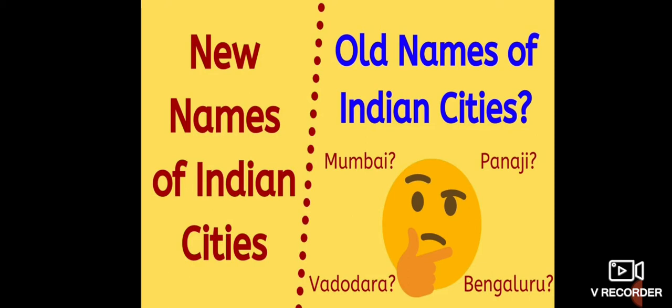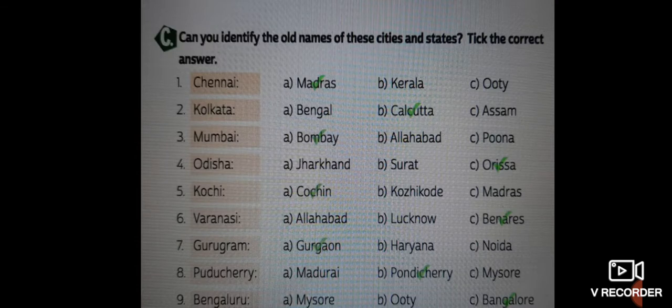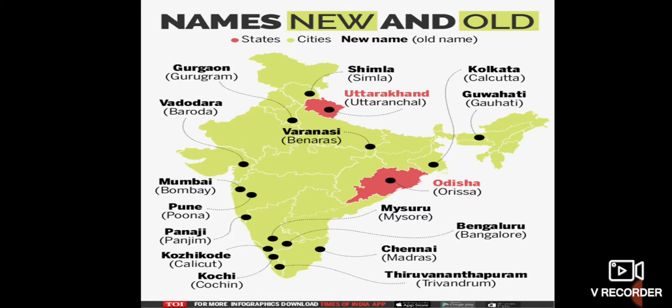Aaj hum discuss karenge about the names of certain cities — kuch aise shehron ke naam jo pehle kuch aur the, aur ab badal kar kuch aur kiye hain. For example, aap jis city Mumbai ko jaante hain, Maharashtra ki city hai Mumbai, usko pehle Bombay kaha jaata tha. This is the exercise of your chapter and we will do this today — Names: New and Old. Kuch bohat saari cities hain India mein jinhe pahle kisi aur naam se pukara jaata tha, aur ab unke names change kiye gaye hain.